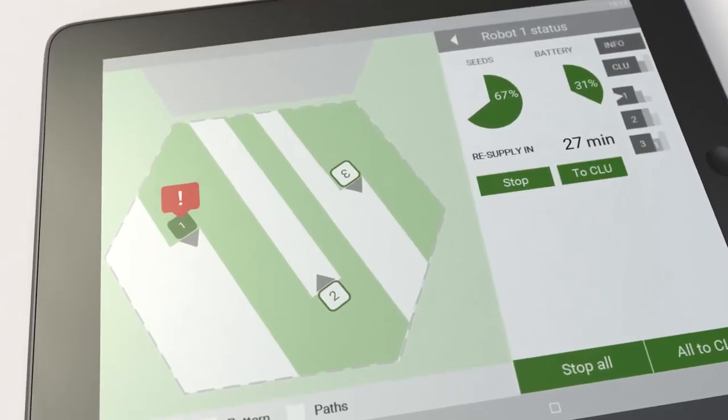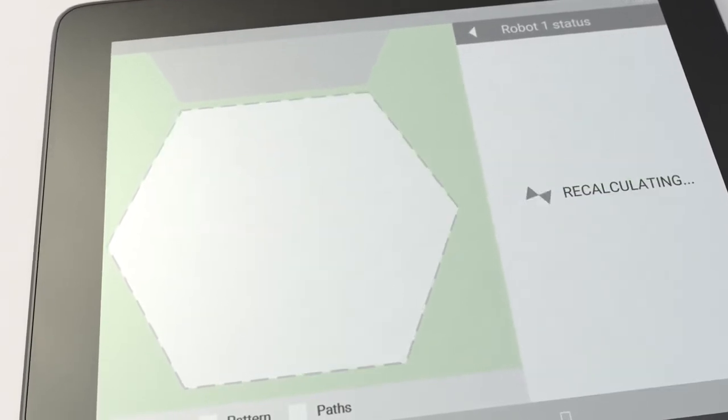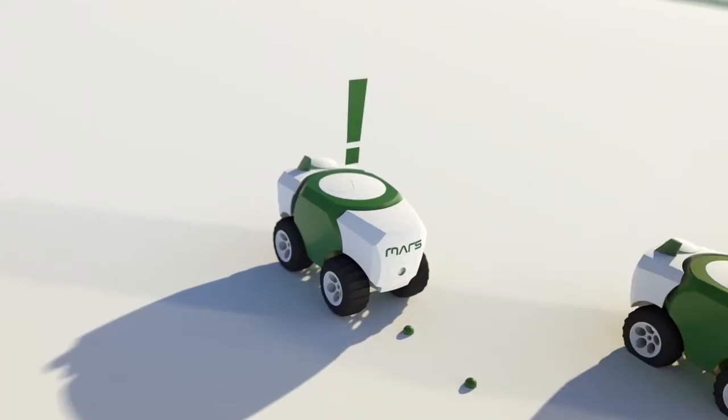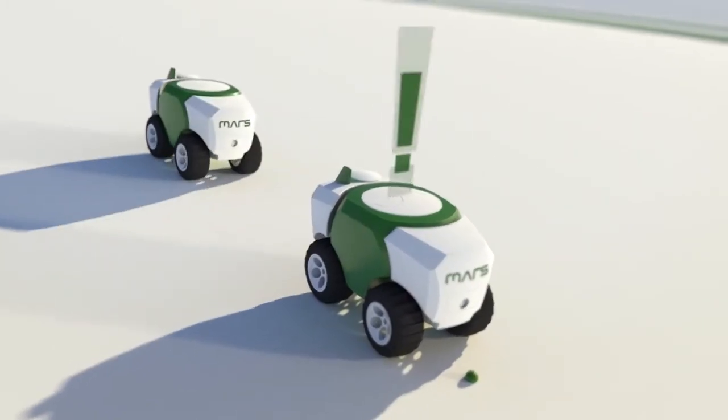In case of a malfunction, MARS automatically recalculates the mission on hand and other robots of the team will step up to get the job done.